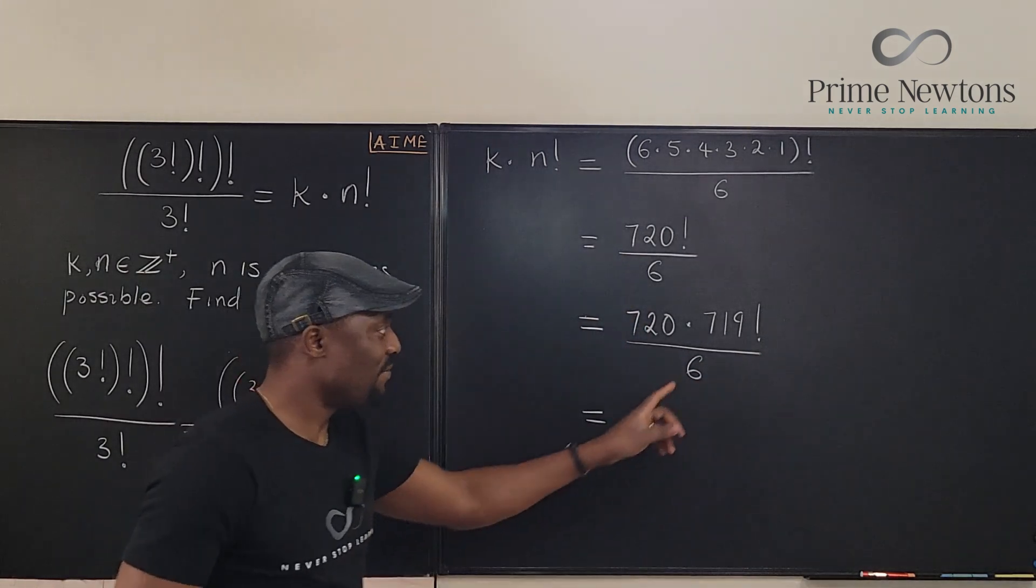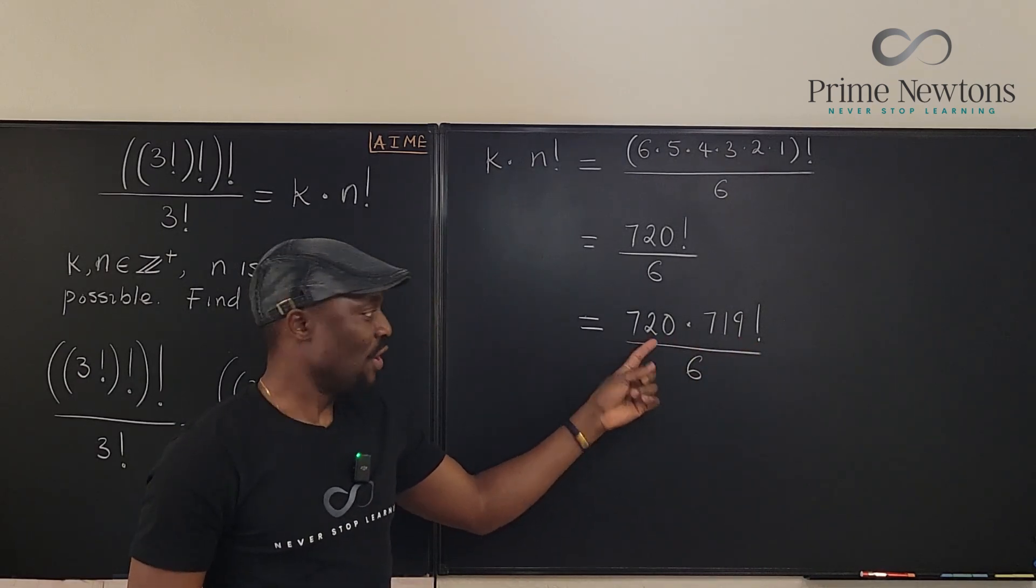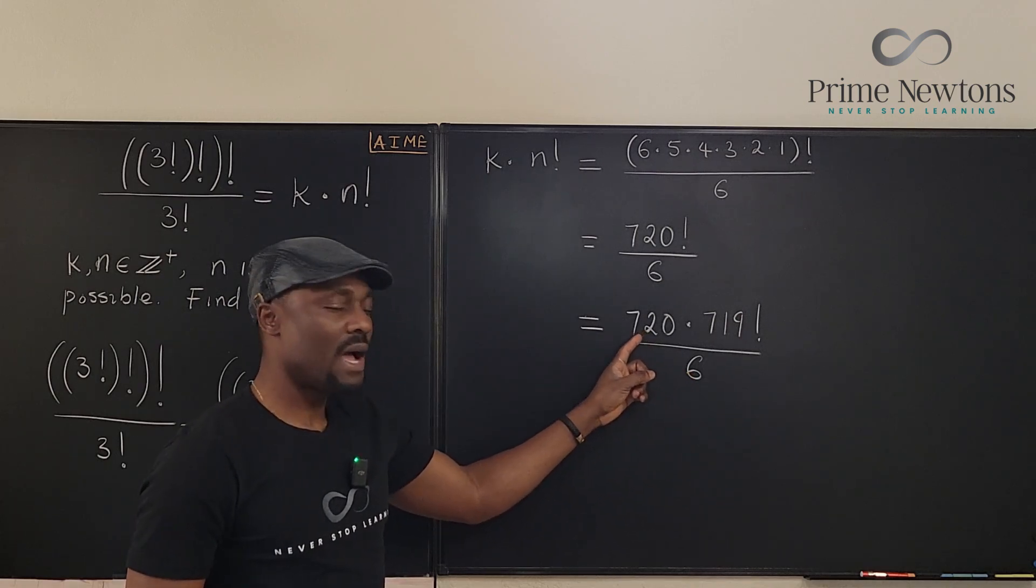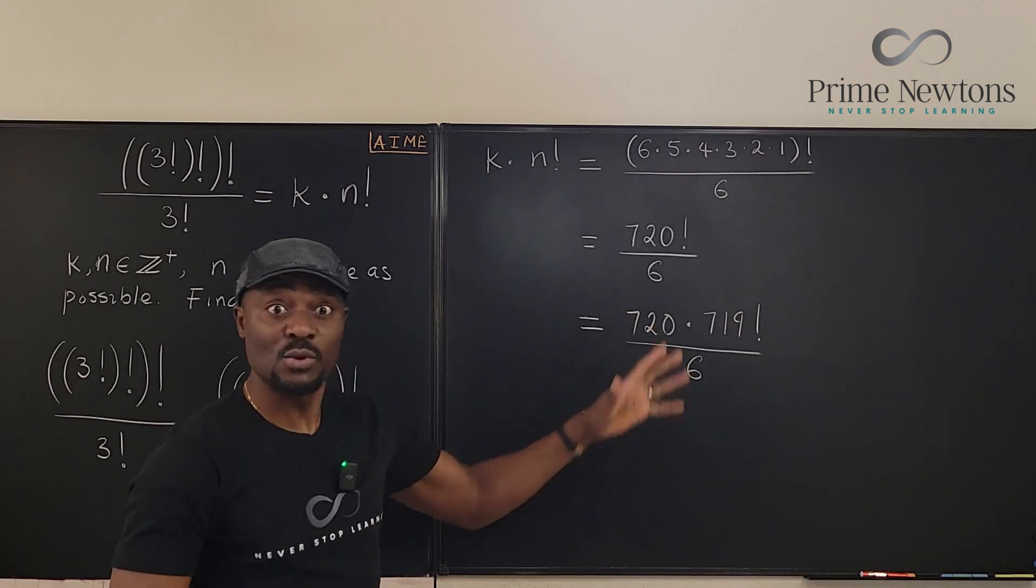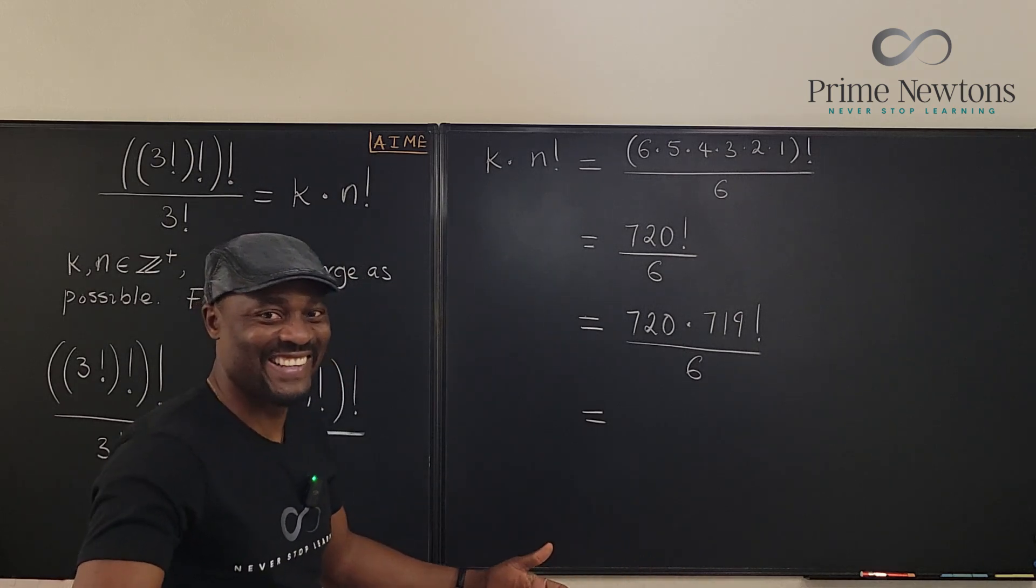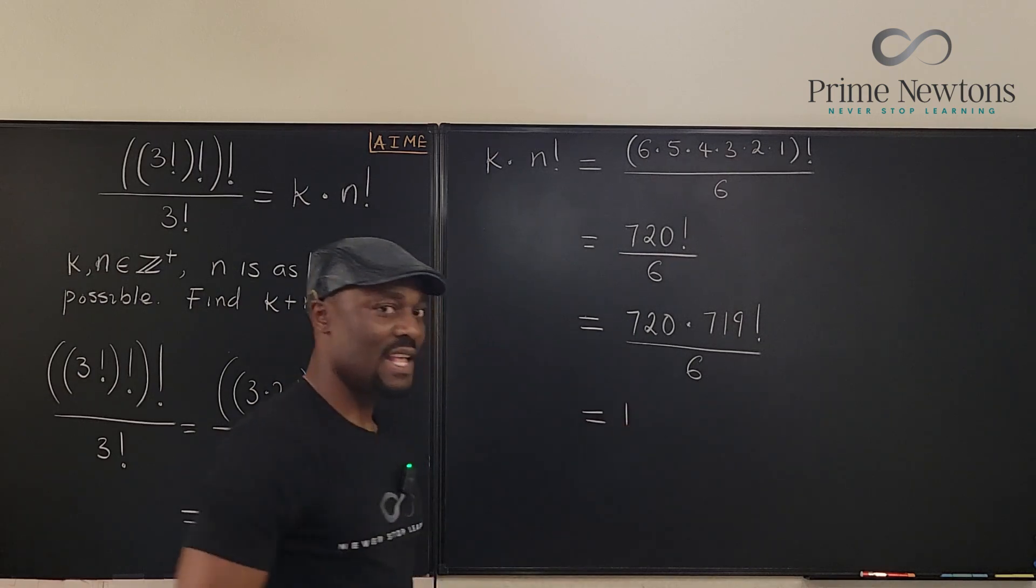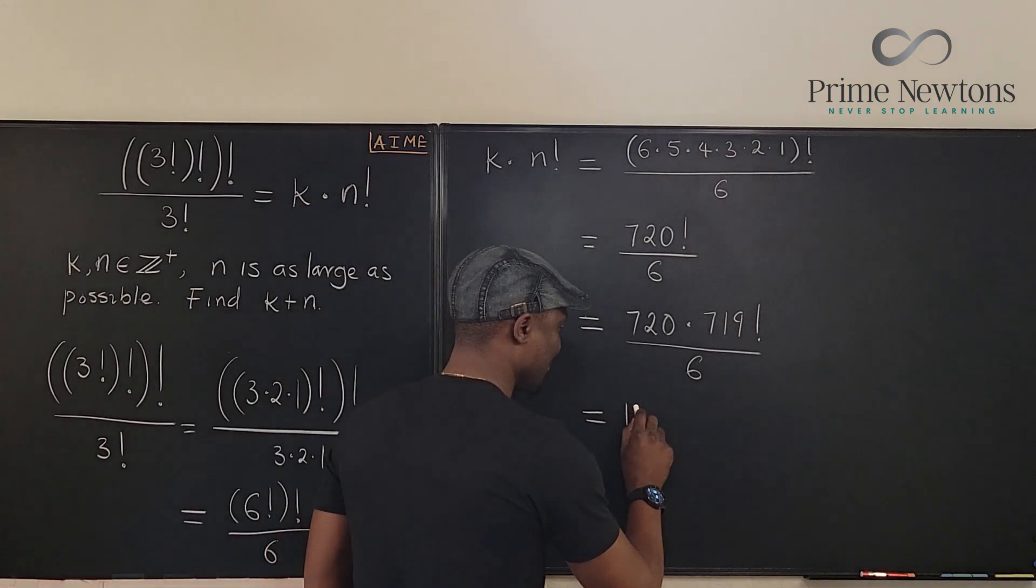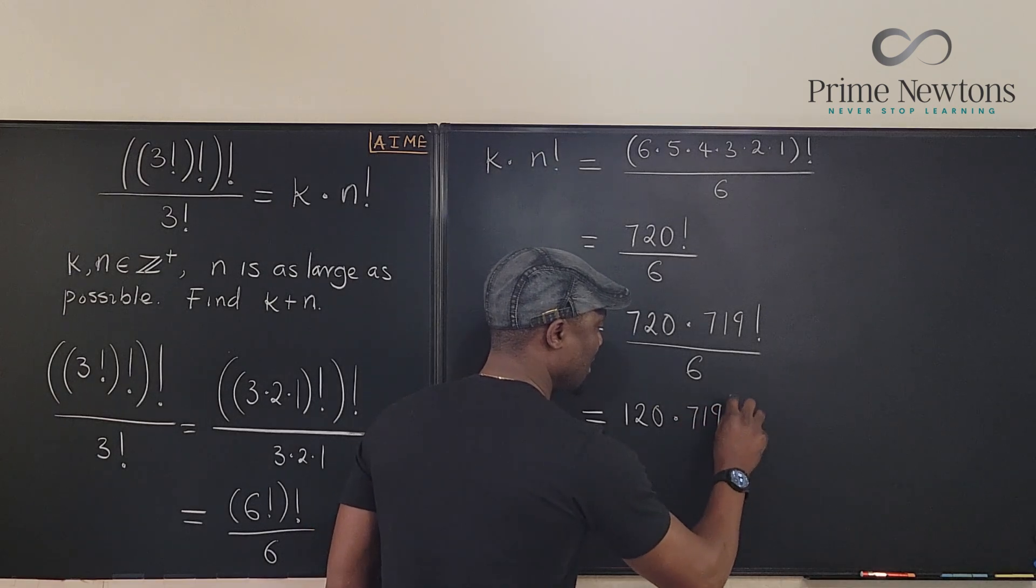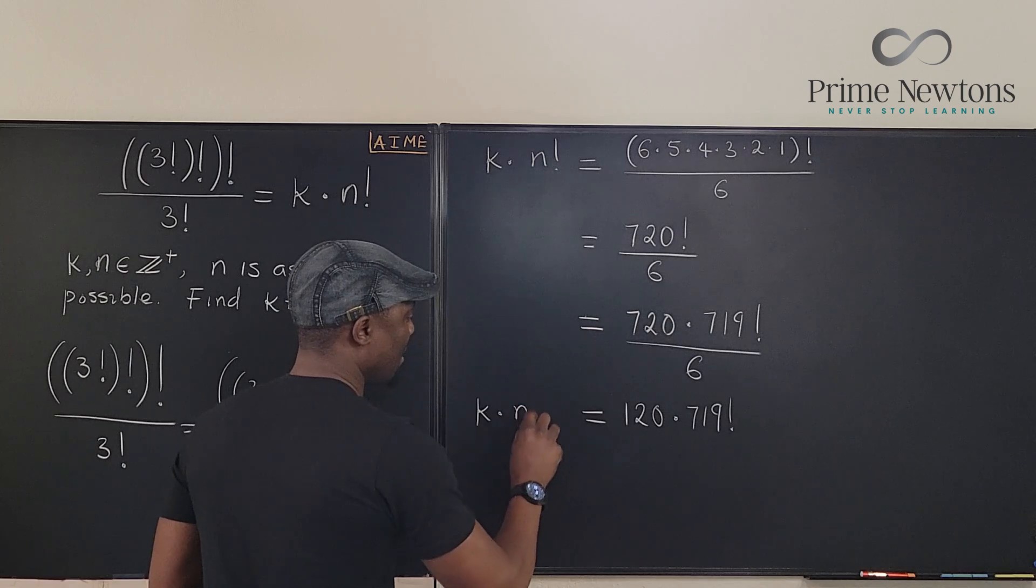Divided by 6. So now we have freed this guy because we can't touch this, but we can touch this one. If you divide 720 by 6, what would you get? Ta-da-da! 6 and 720. 6 and 12 and 7 to 2 is... I already said it. Okay, okay. 6 and 7 is 1 and 12 is 2, 0. It's 120 times 719 factorial. That is K times N factorial.